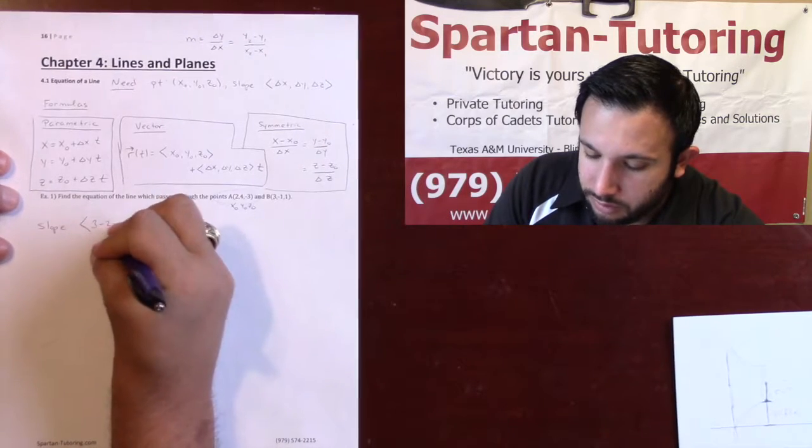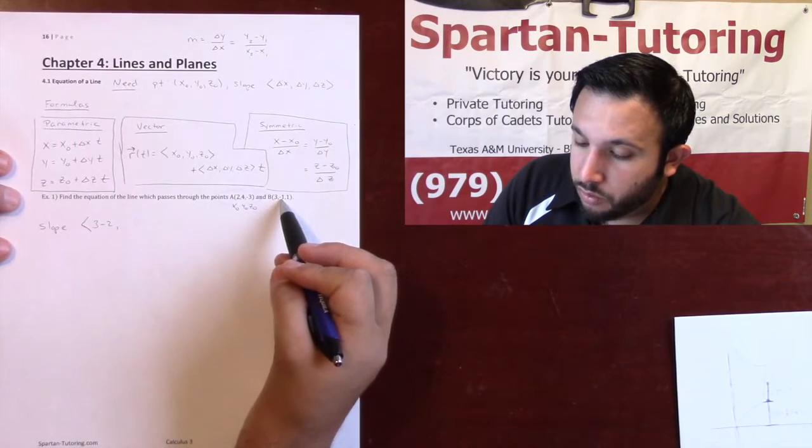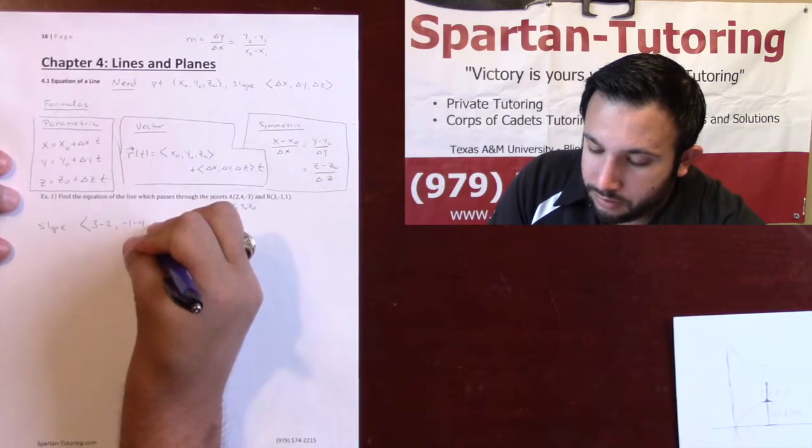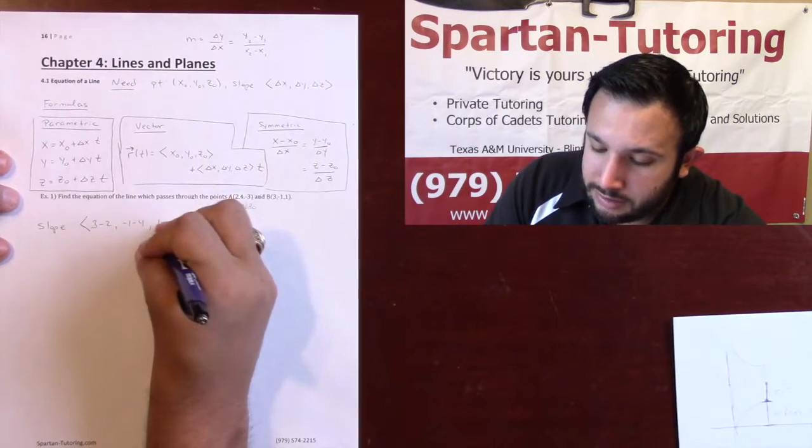I'll just go ahead and write it out. So, 3 minus 2. My delta y, minus 1 minus 4. And your delta z is 1 minus negative 3.